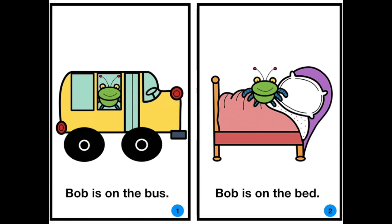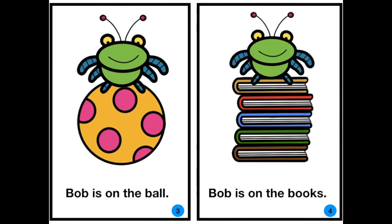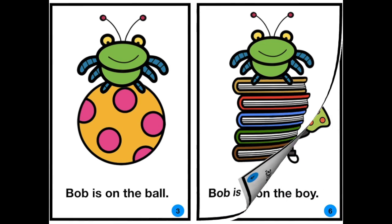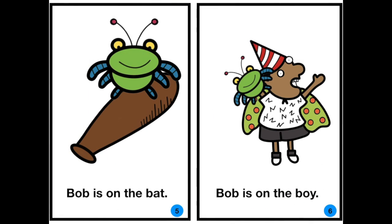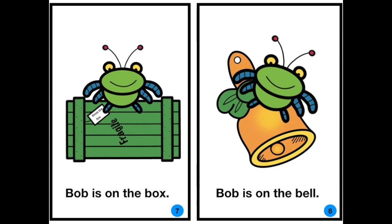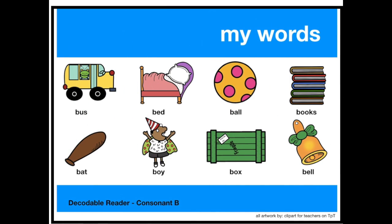Bob the Bug. Bob is on the bus. Bob is on the bed. Bob is on the ball. Bob is on the books. Bob is on the bat. Bob is on the box. Bob is on the bell. Bus. Bed. Ball. Books. Bat. Boy. Box. Bell.